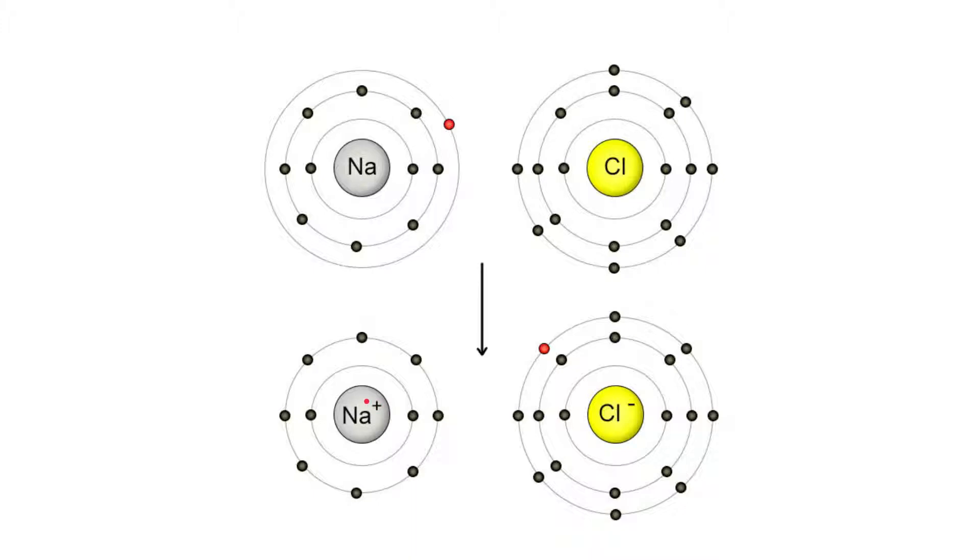Now because sodium has lost an electron, that makes it positively charged. So it is a positively charged ion with a charge of plus one. Over here, we have a chloride ion. This atom has gained an electron, and so it has become negatively charged with a minus one charge.